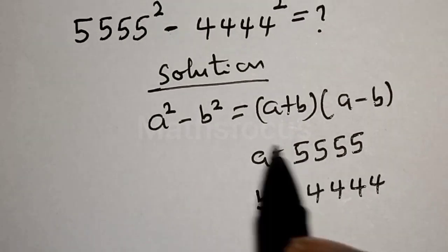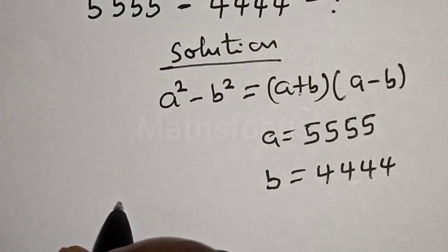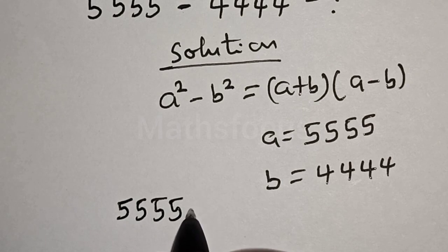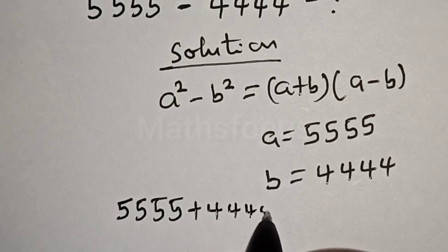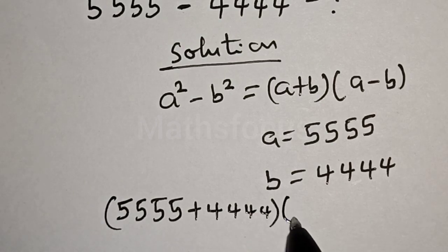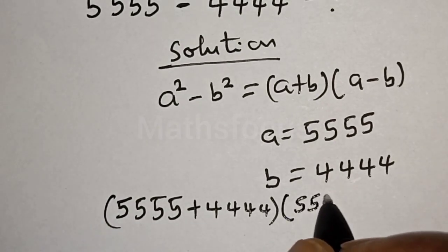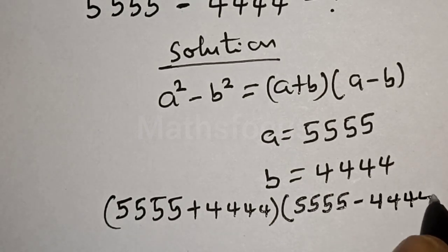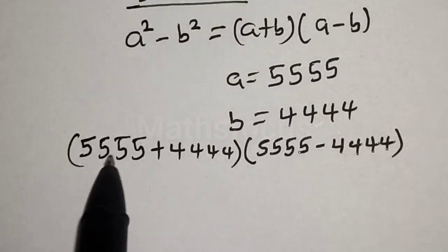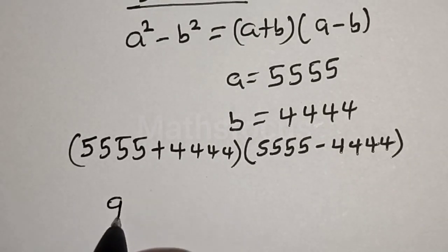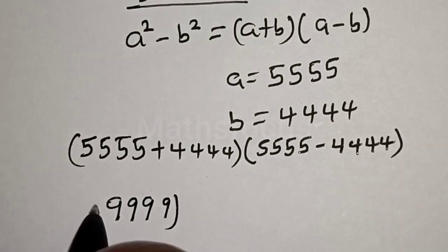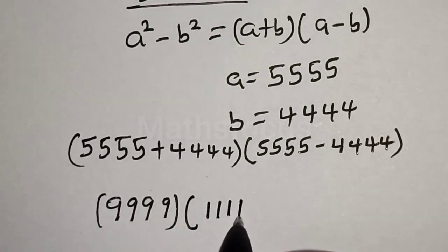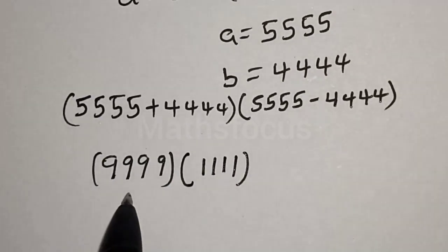Now let's substitute. We have 5555 plus 4444, multiplied by 5555 minus 4444. Adding those together gives us 9999, and subtracting gives us 1111. So we now have 9999 multiplied by 1111.